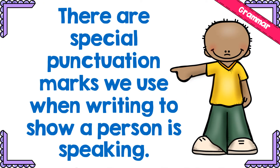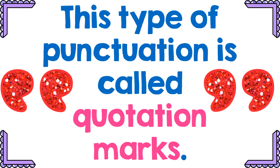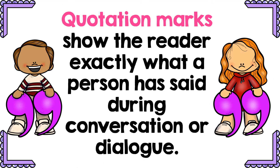There are special punctuation marks we use when writing to show a person is speaking. If someone speaks in a story, there are special ways that we show this — it makes it easier for a reader to see that someone is talking. This punctuation is called quotation marks. You can see these quotation marks drawn on this slide — they're the red quotation marks. They start the actual talking, the dialogue, and they come at the ending of what the person is saying. Quotation marks show the reader exactly what a person has said during conversation or dialogue — exactly what is coming out of their mouth.